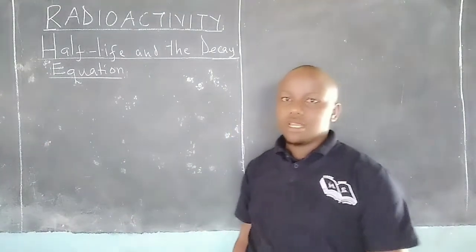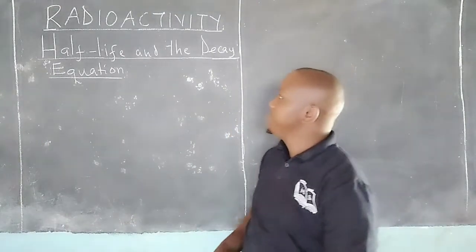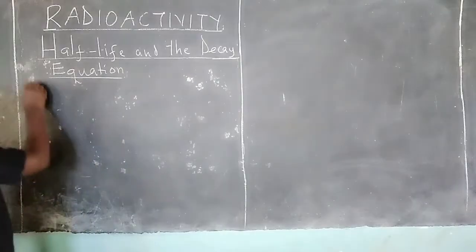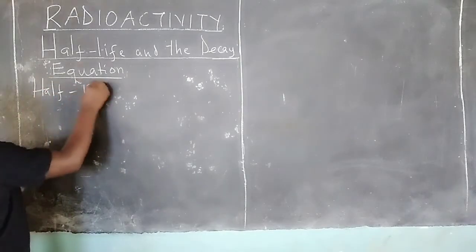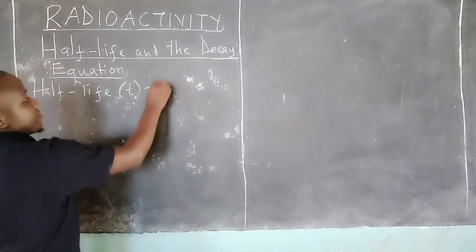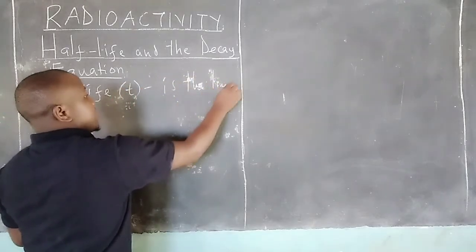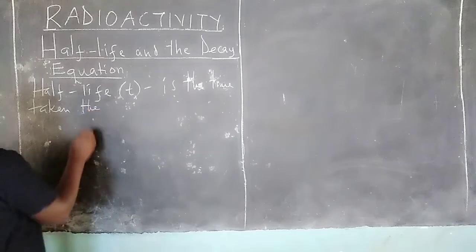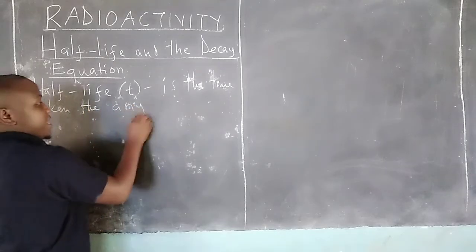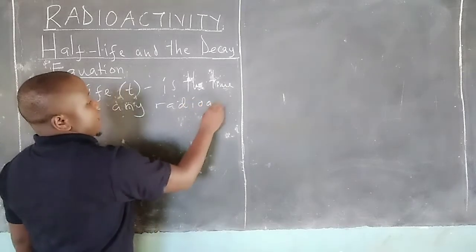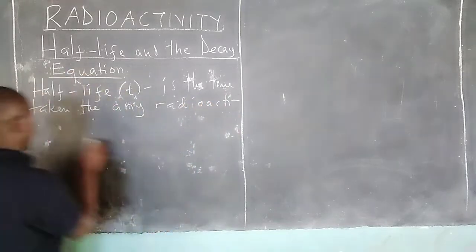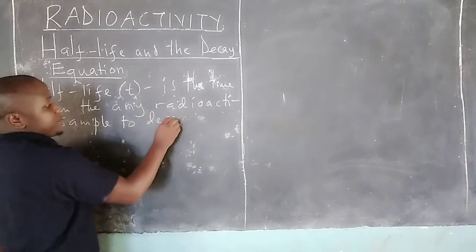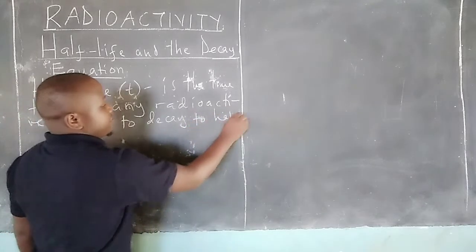Thank you for joining this lesson. We are going to study half-life and the decay equation. To define half-life, we usually say that half-life, represented by small letter t, is the time taken for any radioactive sample to decay to half its value.